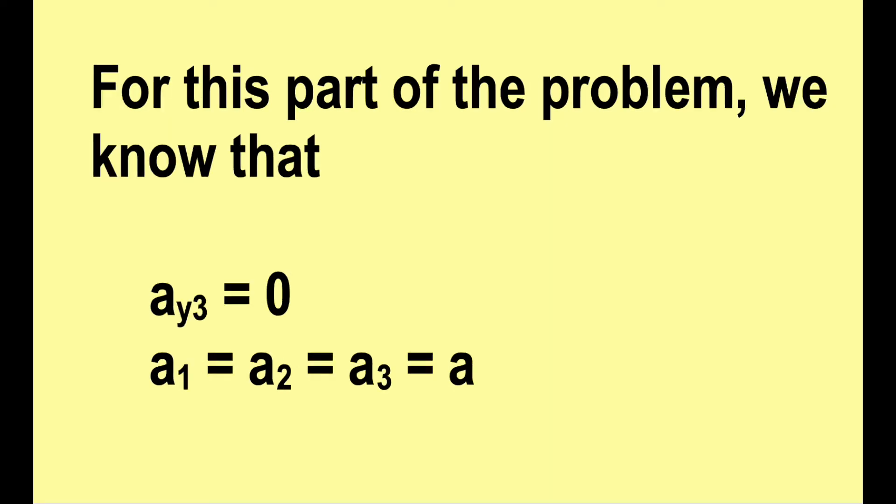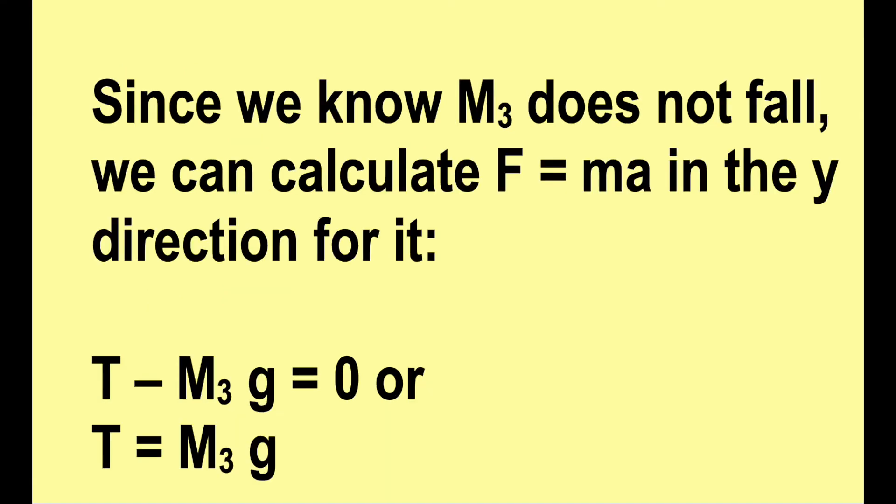For this part of the problem, we know that mass 3 is not moving up or down, so its acceleration is zero. We also know that all three objects move together, so a1, a2, a3 are all the same. Let's just call it a. Since we know acceleration 3 in the y direction is zero, the F equals ma in the y direction for mass 3 looks very simple and gives us tension equals m3g.